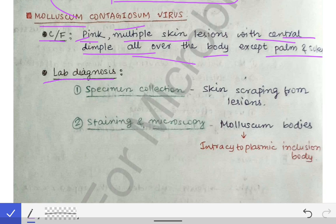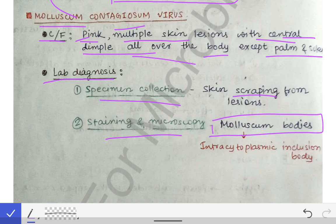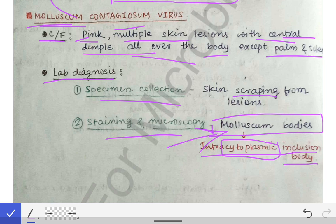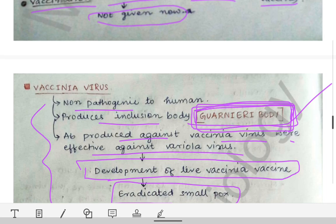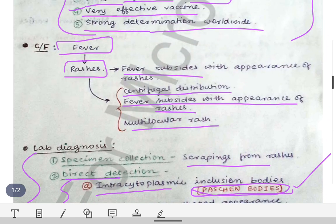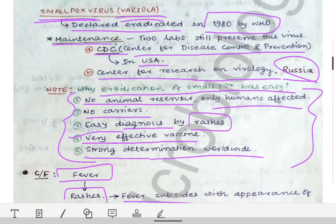For diagnosis of molluscum contagiosum virus, skin scrapings are collected as the specimen. After staining and microscopy, we can see molluscum bodies — intracytoplasmic inclusion bodies. The name is easy to remember: the virus is molluscum contagiosum, so the inclusion bodies are molluscum bodies. The most important points about pox viruses overall are the inclusion body names, which you must remember.